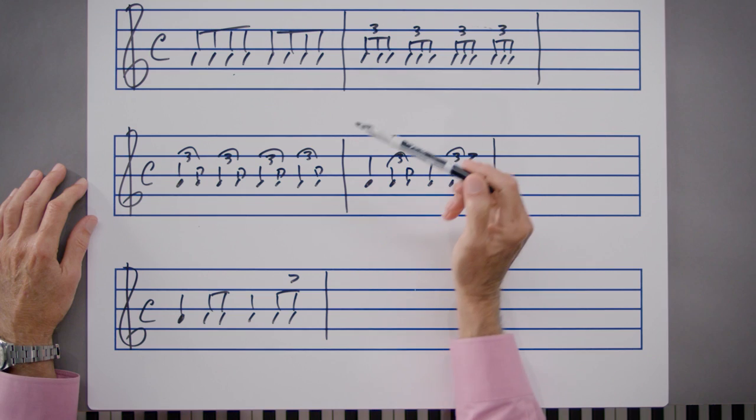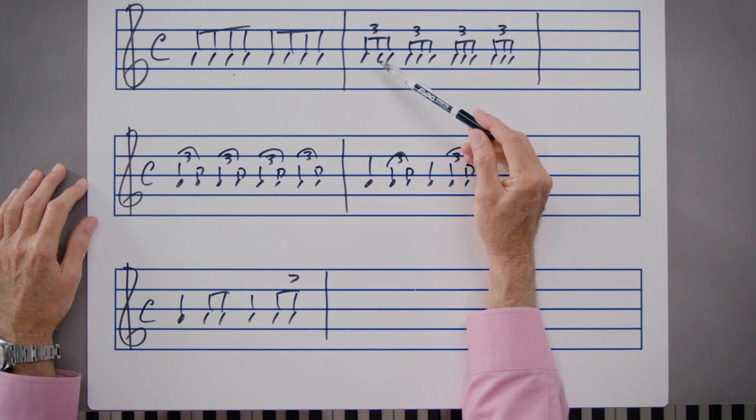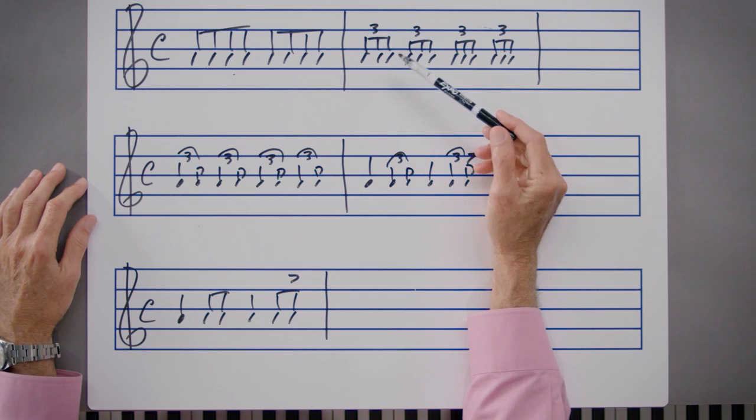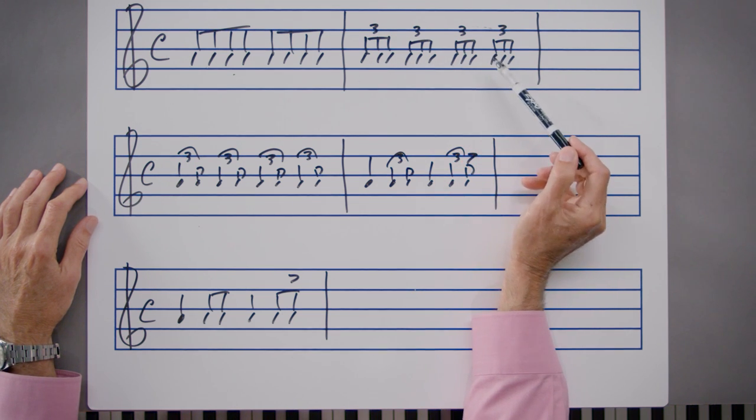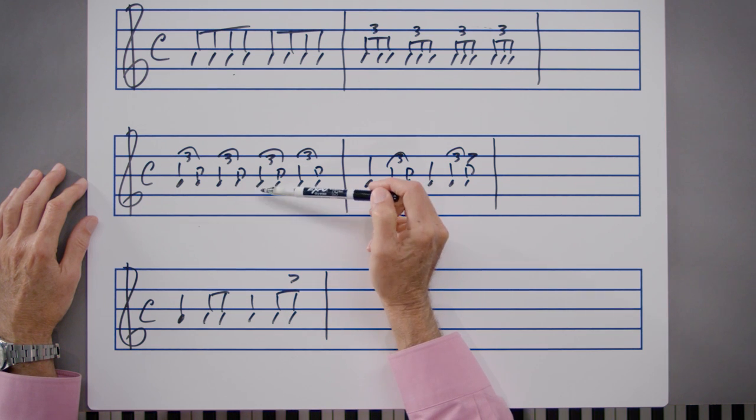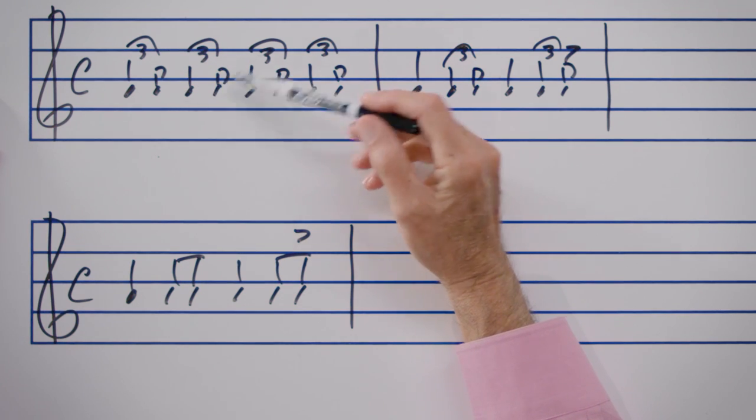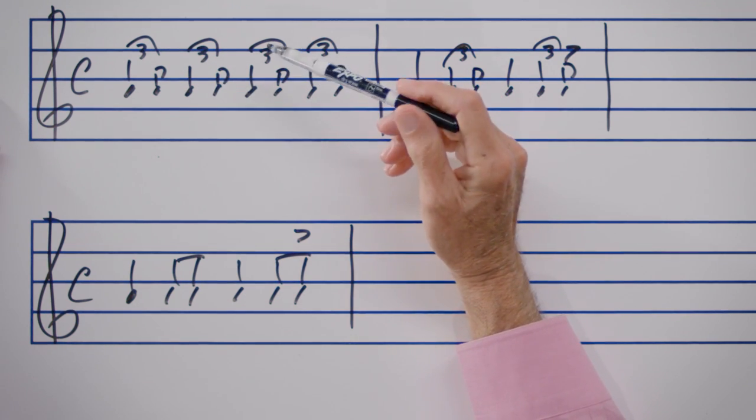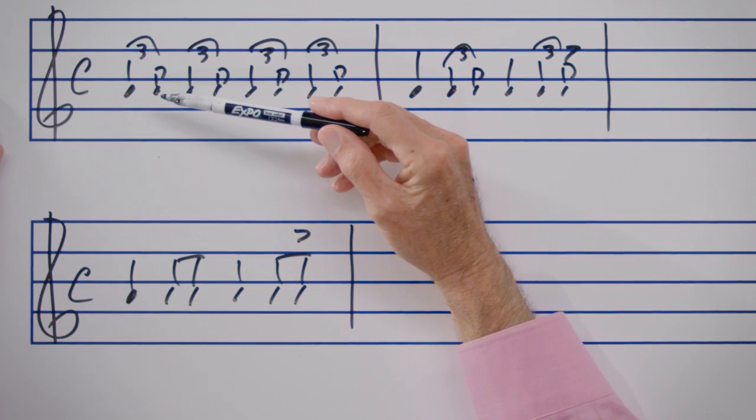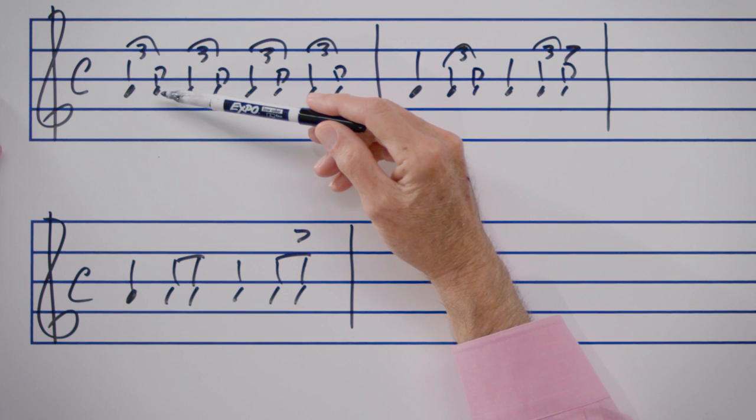We must keep the sound of the eighth note triplets in our mind: one and a two and a three and a four and a, one and two and three and four and. We're keeping the one and a two and a three and a four and, keeping the triplet subdivision. This notation is approximate, meaning it isn't exactly accurate.